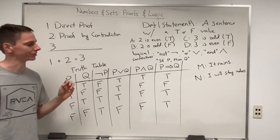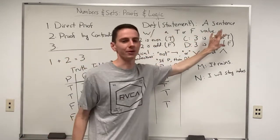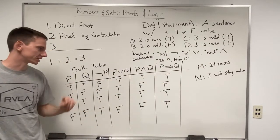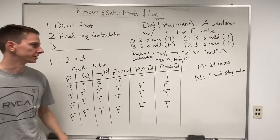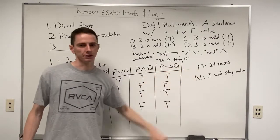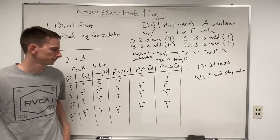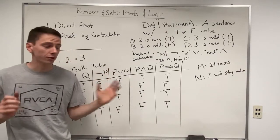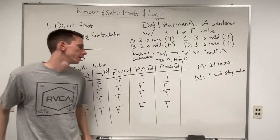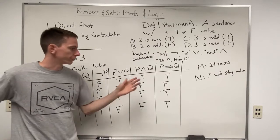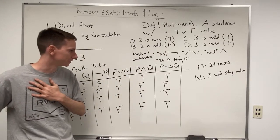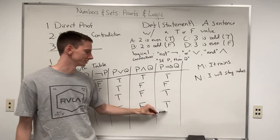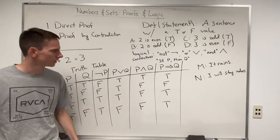That can be a little weird to wrap your head around, but the key result is: the only case where P implies Q is false is when the first statement is true and the second is false. All other combinations are true.